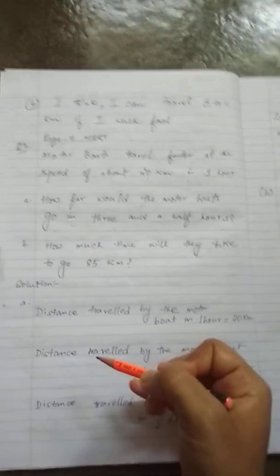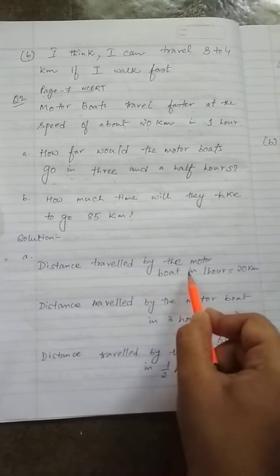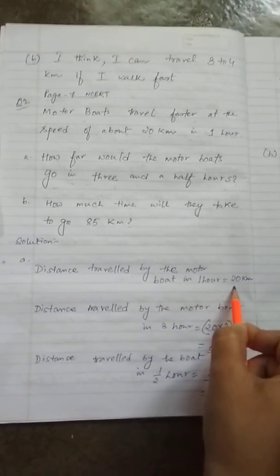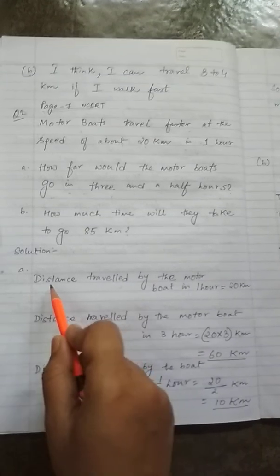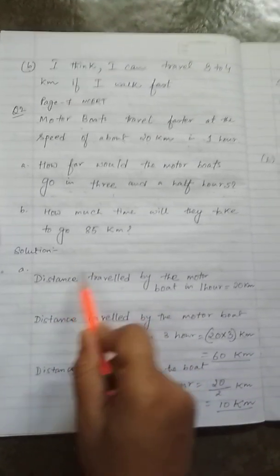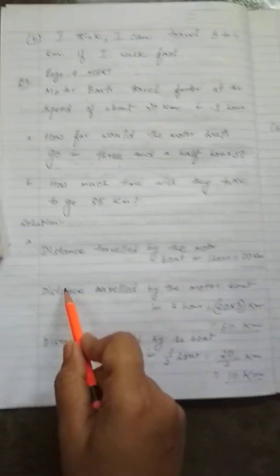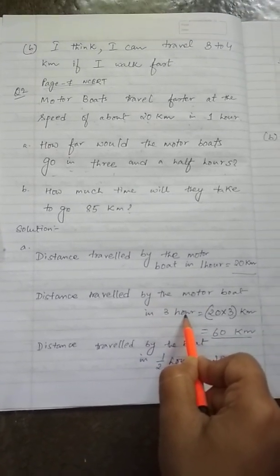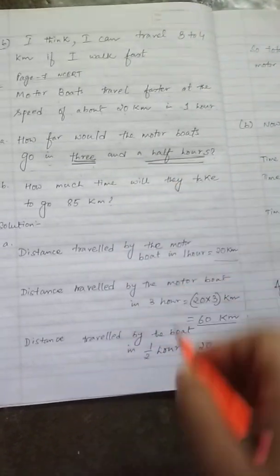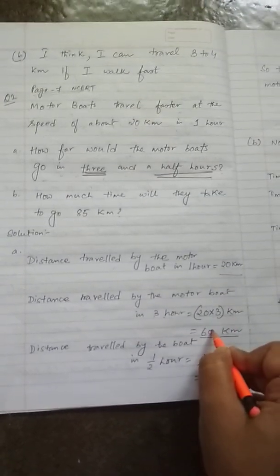Let's go to the solution part. And I hope I have been able to do it in a simple way so that everybody can understand. Distance traveled by the motorboat in one hour is already given: 20 km. You see here it travels 20 km in one hour. So my first line is the given statement in the question. Distance traveled by the motorboat in one hour equals 20 km. Now distance traveled by the motorboat in three hours, that is 20 into 3, which is 60 km.